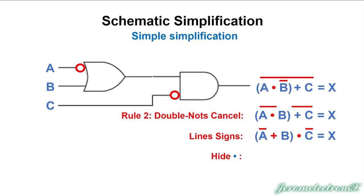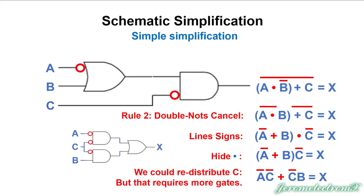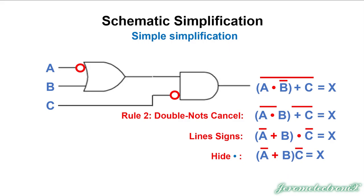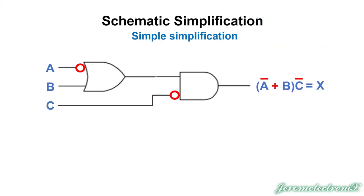Let's hide the implied multiplication, and there it is. At this point, students often think we should distribute that NOT C into the B and the A. We could redistribute that C, but it actually makes an equation that requires more gates — three gates versus just two. So we'll stop here and make the most simplified version of it. There are other reasons to simplify further we'll discuss later, but for now, this is good.